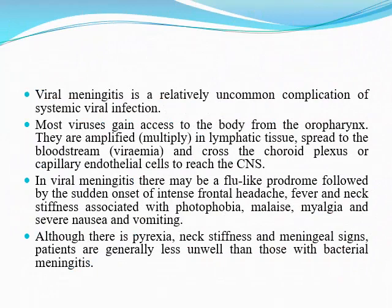Viral meningitis is a relatively uncommon complication of systemic viral infection. Most viruses gain access from the oropharynx, multiply in lymphatic tissue, spread to the bloodstream via viremia, and cross the choroid plexus or capillary endothelial cells to reach the CNS. In viral meningitis, there may be a flu-like prodrome followed by sudden onset of intense frontal headache, fever, neck stiffness, photophobia, malaise, myalgia, severe nausea, and vomiting.